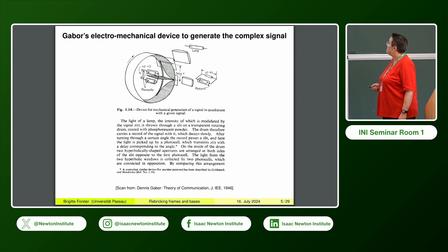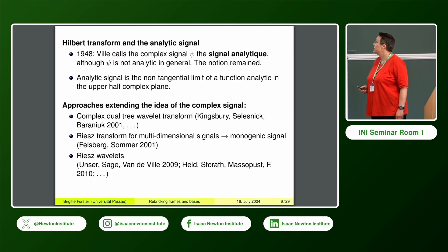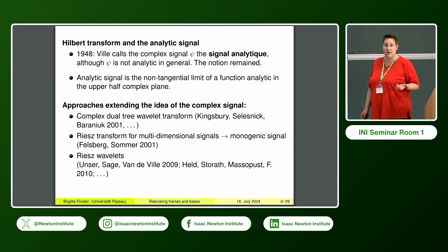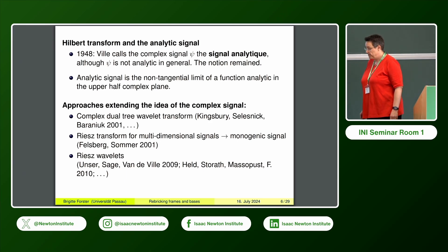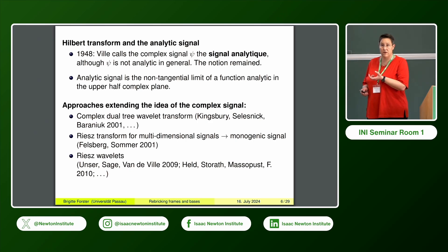Gabor thought it was so important that he even thought about constructing an electromagnetic device to generate this complex signal. Two years later, Will took this idea and called it the 'signal analytique'—the analytic signal—which is the term we still refer to today. Although by this construction we don't get a truly analytic function in the sense of complex analysis; it's the limit of a function analytic in the upper or lower half plane with a non-tangential limit. This notion stuck, and it has been around since then in signal and image processing, re-emerging around 2000 with the complex dual-tree wavelet transform, where the analytic signal idea was combined with wavelet analysis.